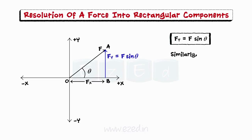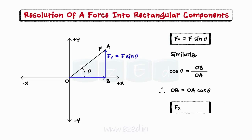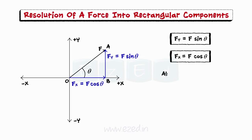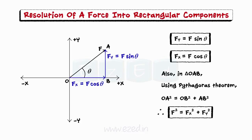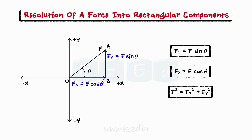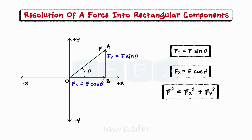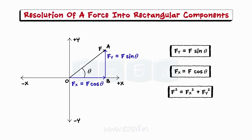Similarly, the horizontal component Fx equals F cos theta. Also, in triangle OAB, by Pythagoras theorem, OA squared equals the sum of OB squared and AB squared. Hence, we can conclude that any force and its rectangular components are related to each other by this relation.